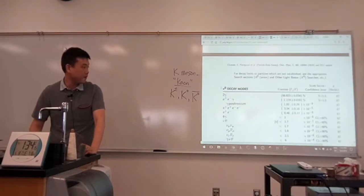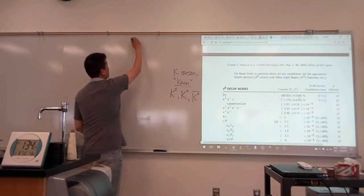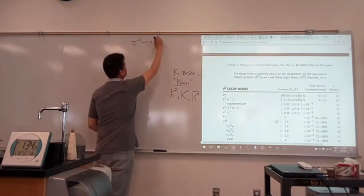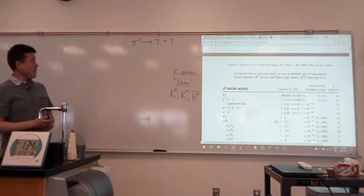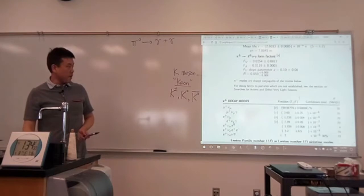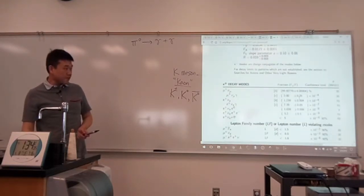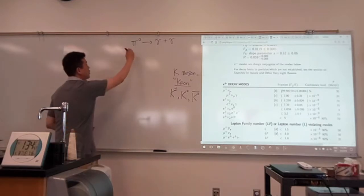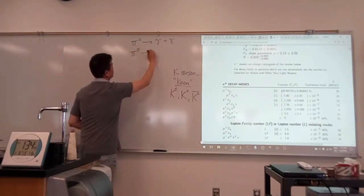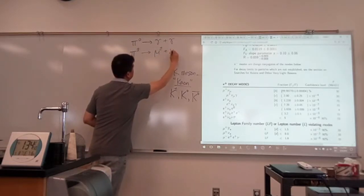So pi naught, 99% of the time, it decays into two photons. So the common way a neutral pion would decay is into two photons. Good? And a common way, the most common way charged pion decays is into muon. It also can decay into electron, but only a very small fraction. So 99.99% of the time, a charged pion would decay into muon, or rather anti-muon and muon, and a muon neutrino.